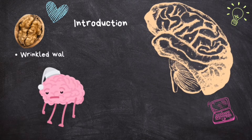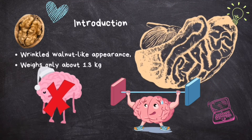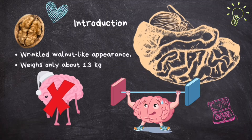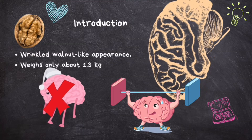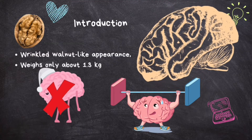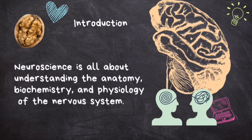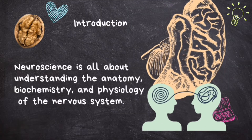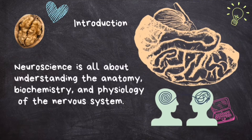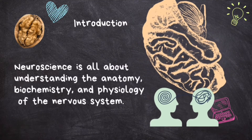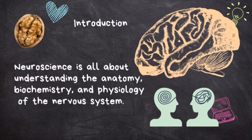It might not win any beauty contest, looking like a crinkled walnut and all, but appearances can be deceiving. Weighing in around 1.3 kg, this intricate bundle of tissue holds a mind-blowing number of neural connections, or neurons, that basically run the show for all our behaviors. And despite its incredible importance, our brain remains one of the biggest mysteries of our bodies. This is where the magic of neuroscience comes into play — neuroscience is all about understanding the anatomy, biochemistry, and physiology of the nervous system.